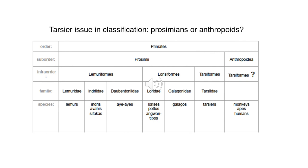Looking at the tarsier classification chart, tarsiforms appear in both prosimii and anthropoidea categories. Some anthropologists categorize them as prosimians; others argue they are our first anthropoid. They truly bridge that gap and there has been a lot of debate about where they truly fall. Make sure you look them up in your book and identify what puts them in each category.